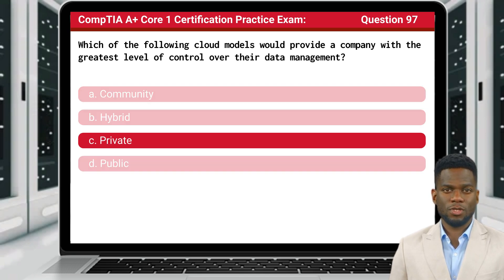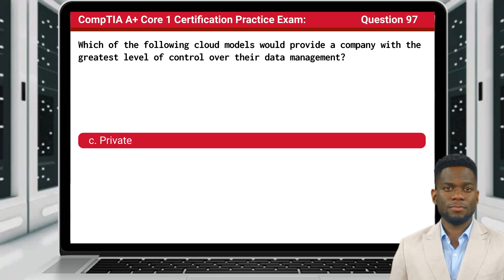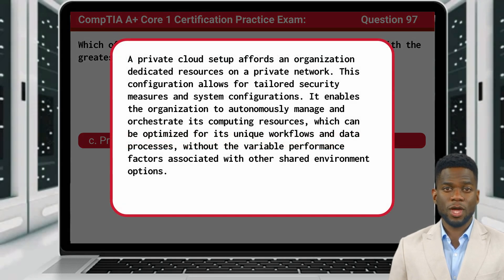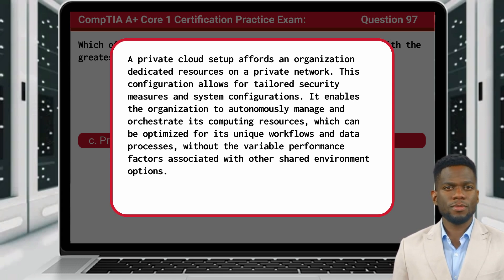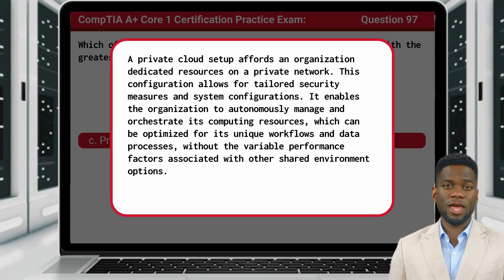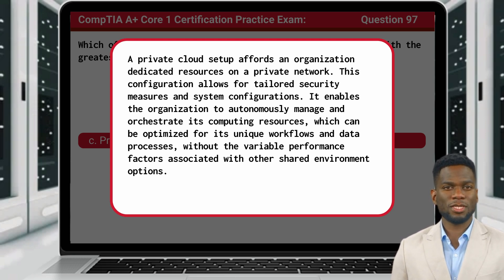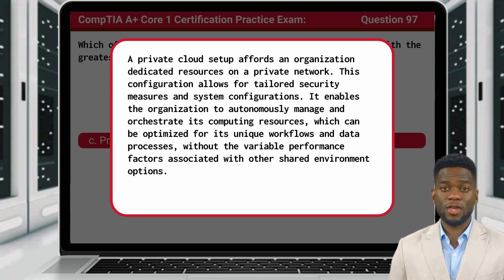The answer is C. Private. A private cloud setup affords an organization dedicated resources on a private network. This configuration allows for tailored security measures and system configurations. It enables the organization to autonomously manage and orchestrate its computing resources, which can be optimized for its unique workflows and data processes, without the variable performance factors associated with other shared environment options.